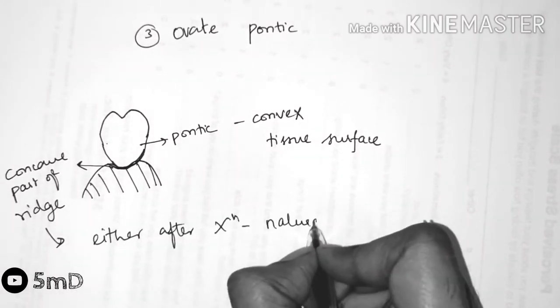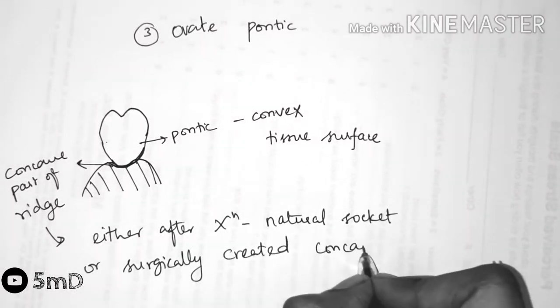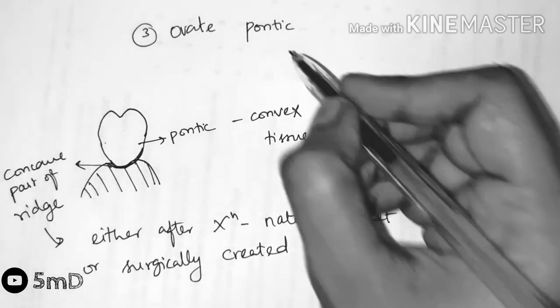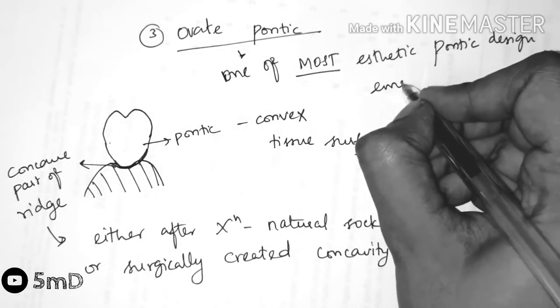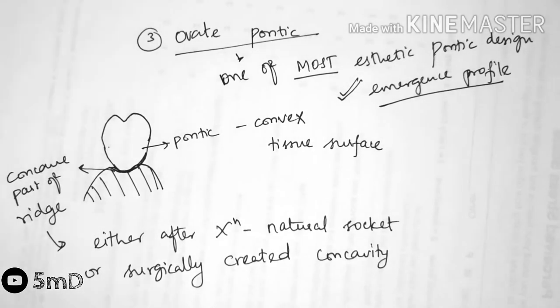The concave part of the ridge can be either after extraction, which is the natural socket, or it can be a surgically created concavity to house the ovate pontic. It is one of the most aesthetic pontic designs because of the emergence profile which imitates the natural tooth almost, and the convexity of the pontic also facilitates flossing.